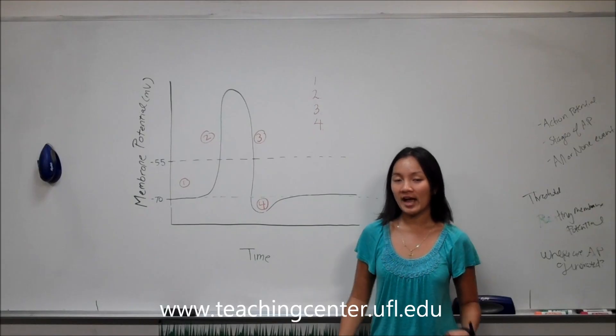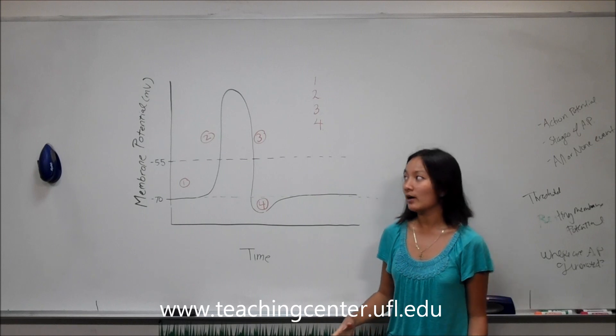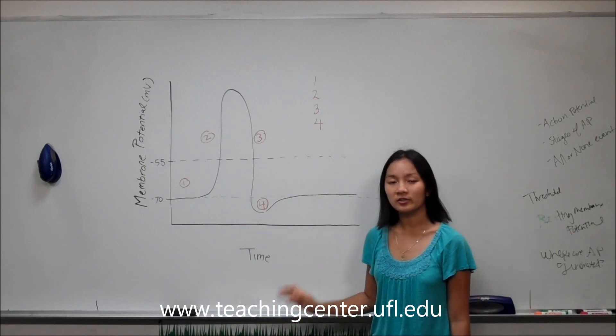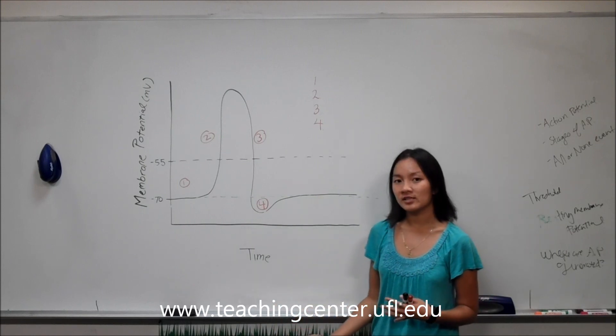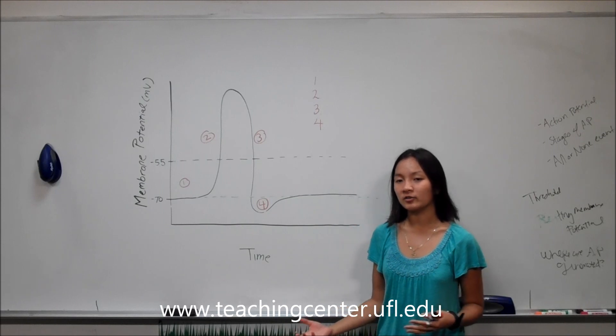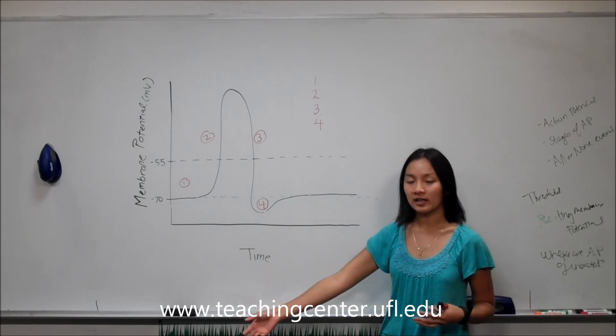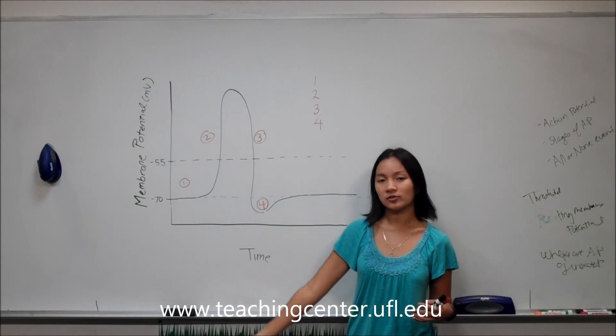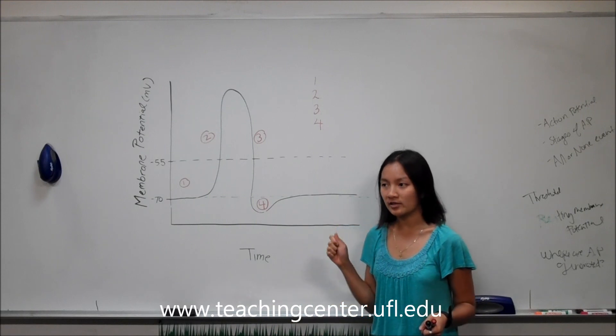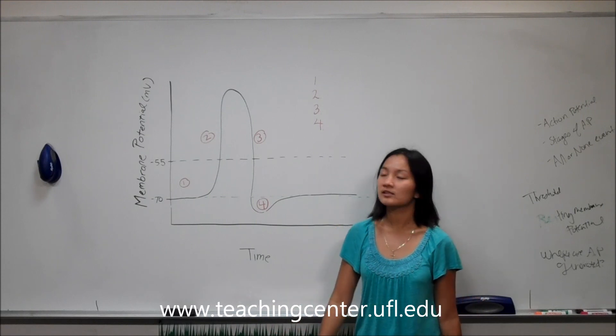Hi, today we'll be going over action potential and how it's generated within your axon. Action potential is the voltage that a neuron sends through its axon to carry electrical information down to the axon terminals so it can release neurotransmitters or anything else.